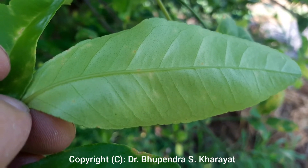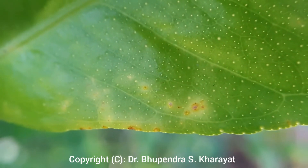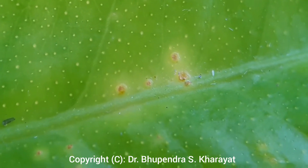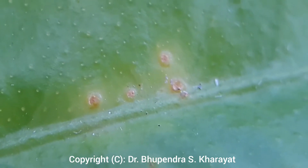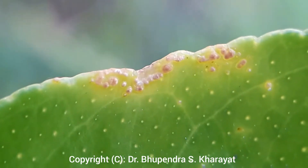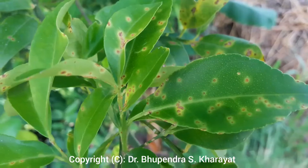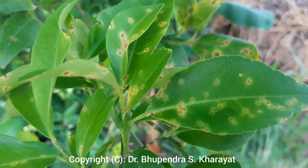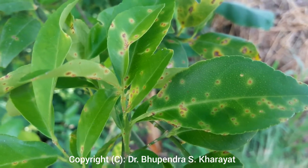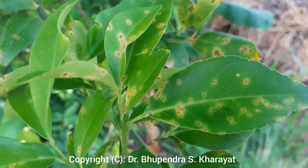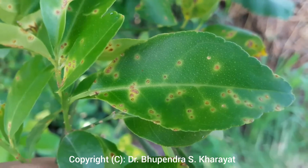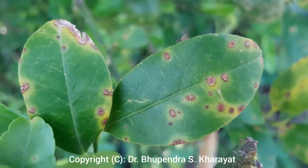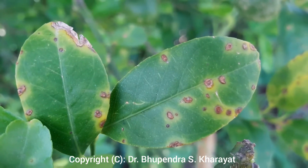Leaf lesions appear first as small, round, watery translucent spots surrounded by a yellow halo. These lesions first appear on the lower surface of the leaves and then on both surfaces. As the disease progresses, the surface of the spots becomes white or gray in color and finally ruptures in the center, giving a rough, corky or canker-like appearance to these spots.